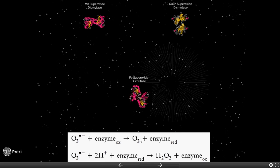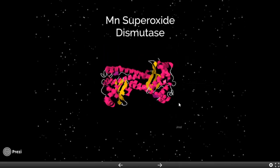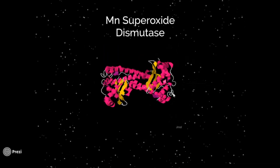A dismutase reaction is a reaction that takes two identical molecules as reactants and makes two distinctly different products. The metal which facilitates these reactions is different in each enzyme. The enzyme we'll be focusing on is manganese superoxide dismutase which uses a manganese catalytic center.